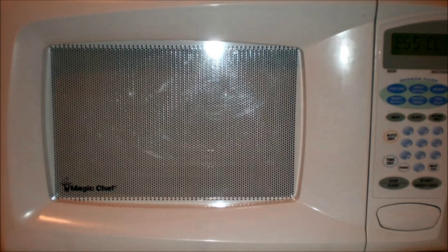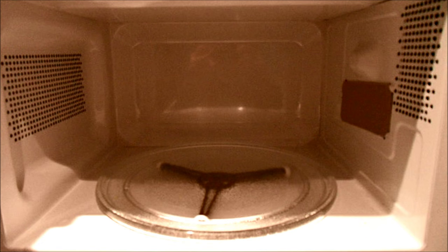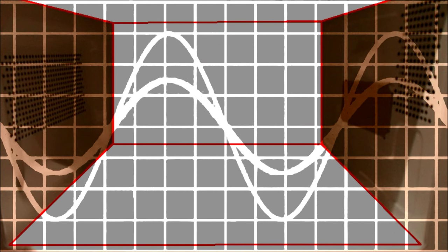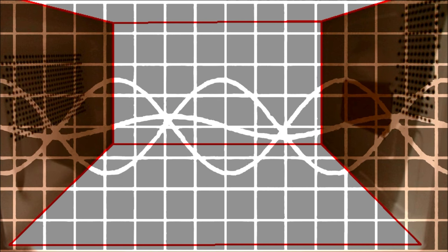Microwave ovens get their name from the fact that they produce microwaves, a type of electromagnetic radiation, which is a form of light. It's just a type of light that we can't see. But they do travel at the speed of light just like any other type of light does.